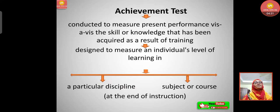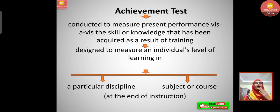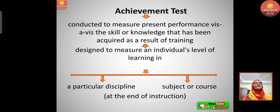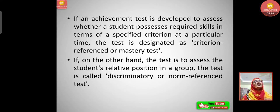Now let's see the achievement test. It is conducted to measure present performance vis-à-vis the skill or knowledge that has been acquired as a result of some training. After giving training, academic support, or completing a course, the achievement test is conducted. It is designed to measure an individual's level of learning in a particular discipline, subject, or course at the end of instruction. In schools, achievement tests are conducted generally. If an achievement test is developed to assess whether a student possesses required skills in terms of a specified criterion, at a particular time, the test is designated as a criterion-referenced or mastery test.